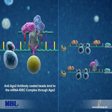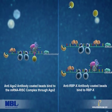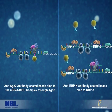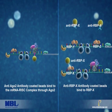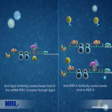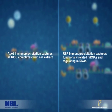On the other hand, anti-RBP beads are used to isolate intact mRNA-RBP complexes, along with microRNAs also bound to the mRNAs. Therefore, microRNAs bound to their functional targets are highly enriched. AGO2 immunoprecipitation captures all RISC complexes from cell extract, whereas RBP immunoprecipitation captures functionally related mRNAs and their regulating microRNAs.